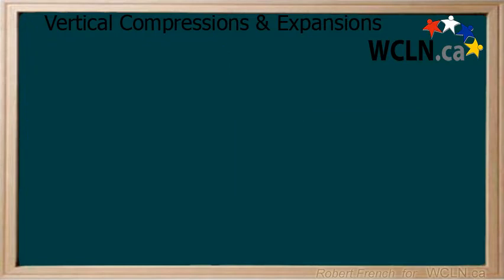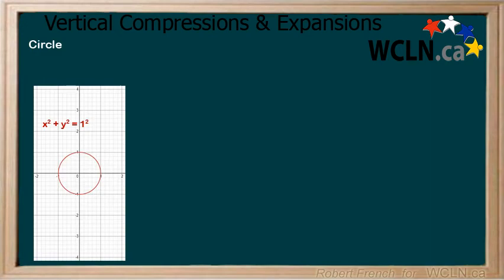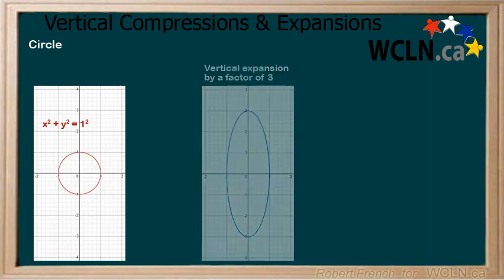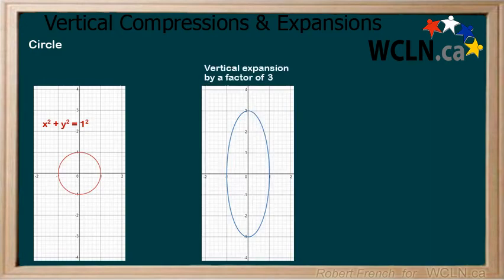First, we will look at a circle. Here is both the equation and graph of a circle. Now apply a vertical expansion by a factor of 3. To do this, we multiply y by 1 over 3. We can see how the graph of the circle changes as well.